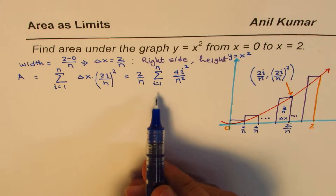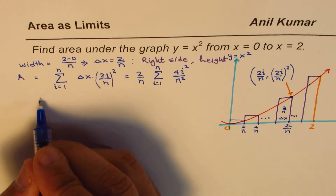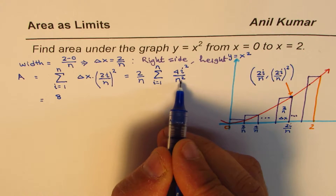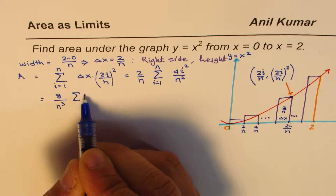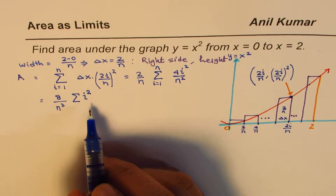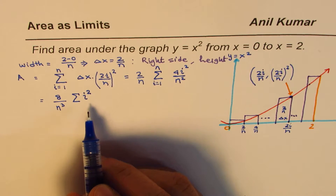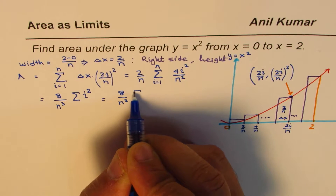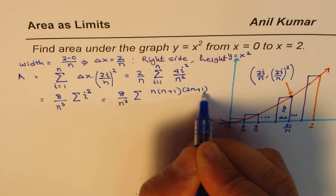Taking the constants outside since they are not dependent on i, the area becomes (2 × 4)/n³ × Σi² = 8/n³ × Σi². Now we apply the formula for the sum of squares: Σi² = n(n+1)(2n+1)/6. Substituting, the area equals (8/n³) × n(n+1)(2n+1)/6.